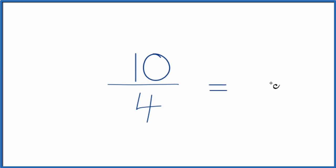To do that, we need to find a common factor, something that goes into 10 and 4. And I think because they're both even, let's divide both of them by 2.